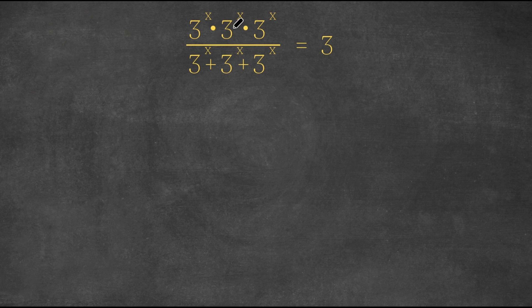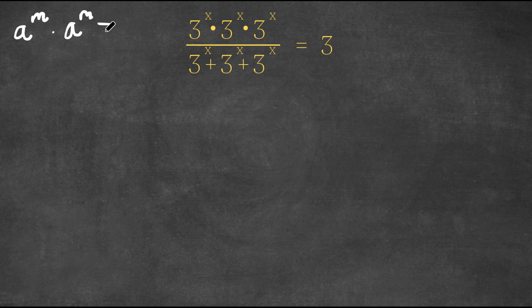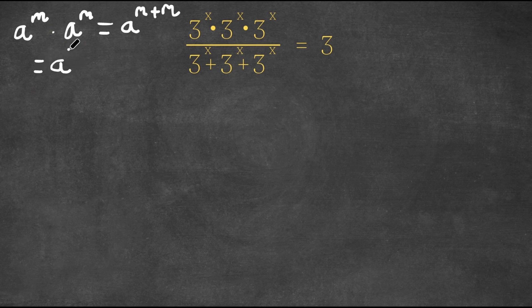Now, 3 to the power of x times 3 to the power of x — if we have something in the form a to the power of m times a to the power of m, this is going to be a to the power of m plus m, which equals a to the power of 2m. So 3 to the power of x times 3 to the power of x equals 3 to the power of 2x.